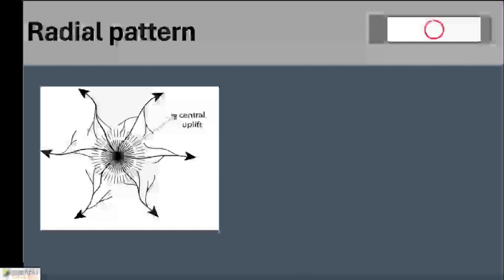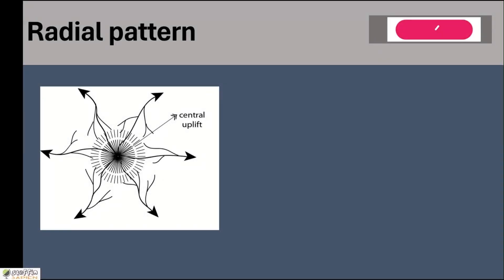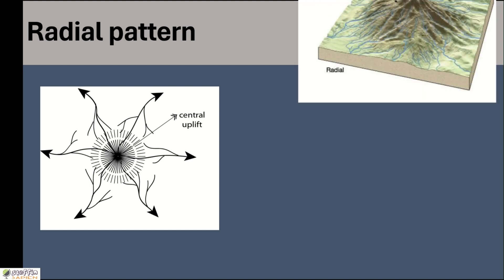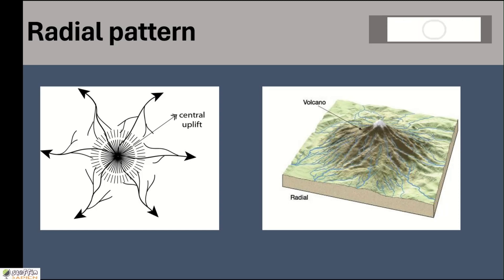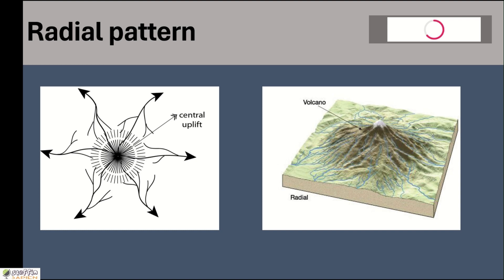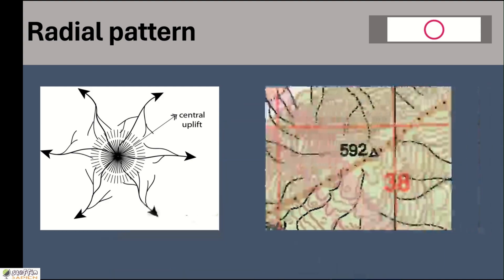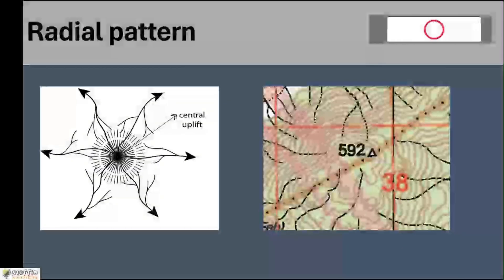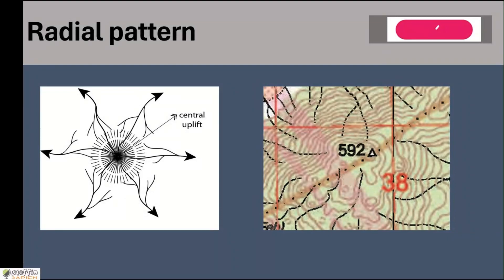The third one is radial pattern. When rivers move outward into different directions from a central point, the pattern is called radial pattern. These kinds of patterns are seen in and around hilly areas. If there are volcanic mountains or any other hill from which rivers originate and flow in different directions, then the pattern will appear radial in nature.